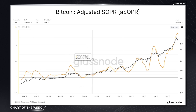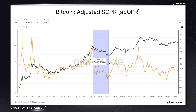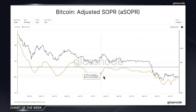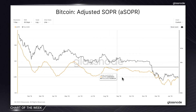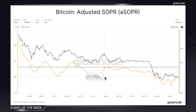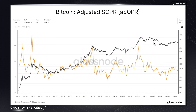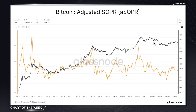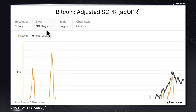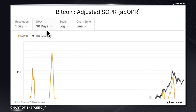And throughout downtrends, we can see that it often also becomes a level of resistance. The current chart we're looking at is the adjusted SOPR, or aSOPR, which is just a variant of the metric that excludes coins younger than an hour. This refinement ensures that we're capturing genuine market behaviour. We've also applied a 30-day moving average to get a clearer picture of more sustained trends over short-term fluctuations.